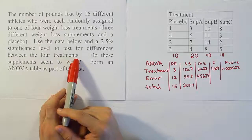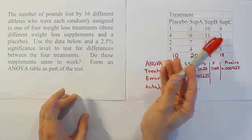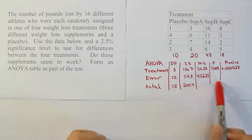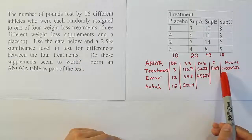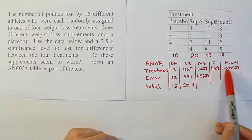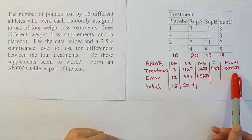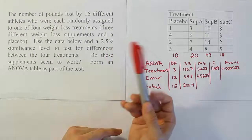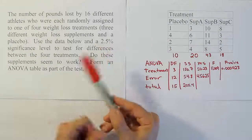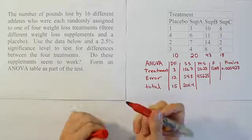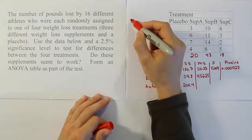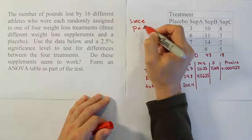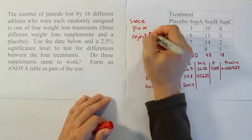The null hypothesis says that all of them are the same — that the treatment means are all equal. Based on this ANOVA table which I formed with this data, you can see the p-value is very small — the p-value is way less than one percent. When the p-value is less than alpha, we decide to reject H0. So since the p-value is less than alpha, we reject H0.